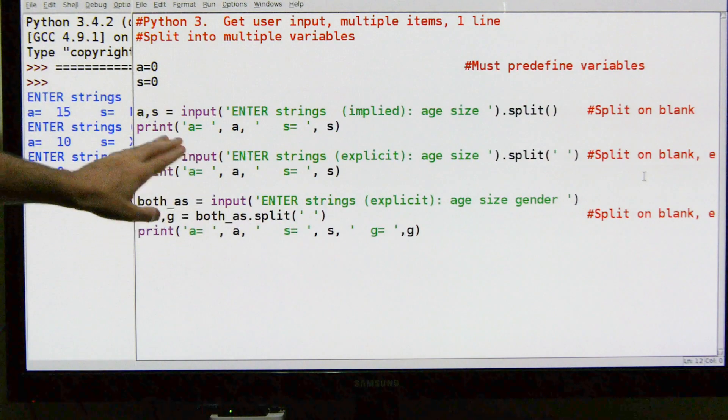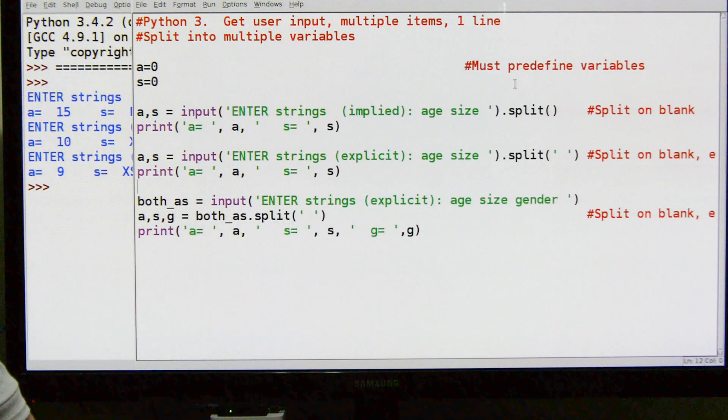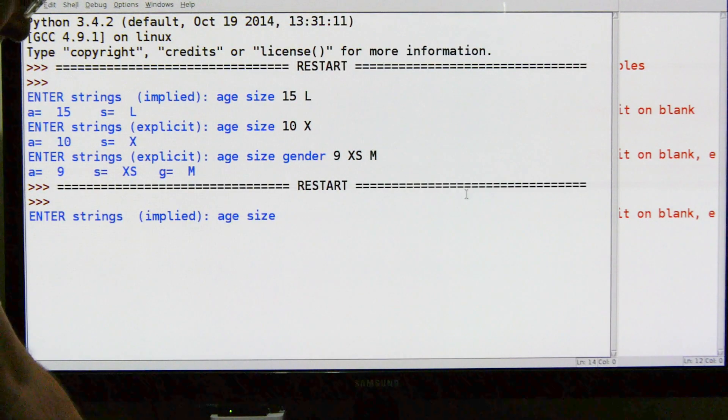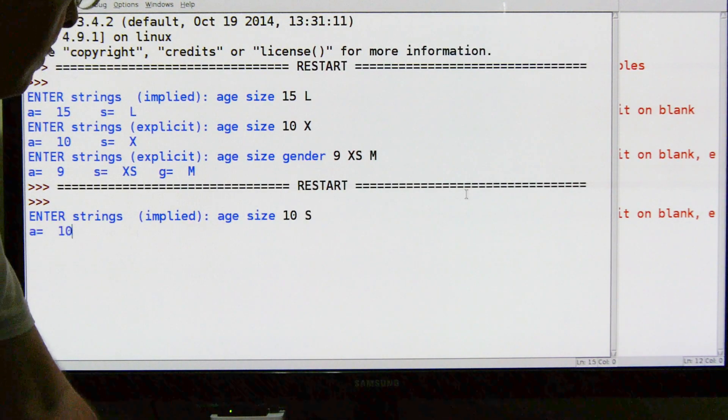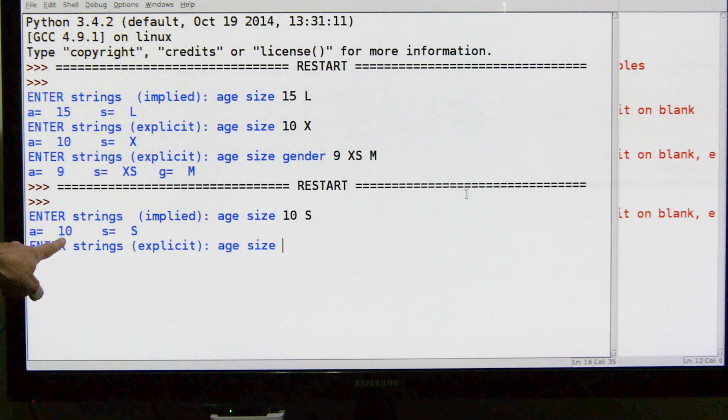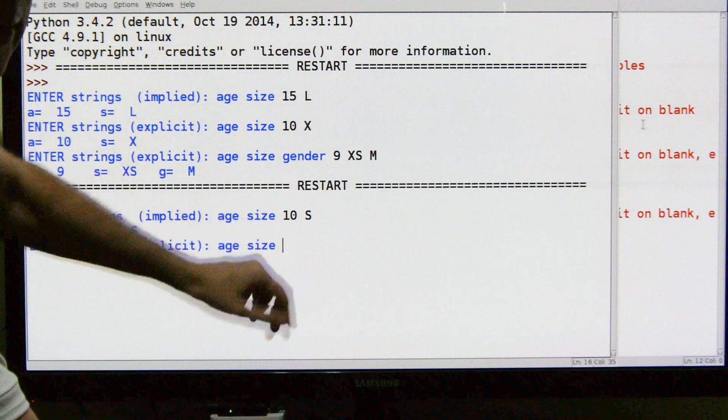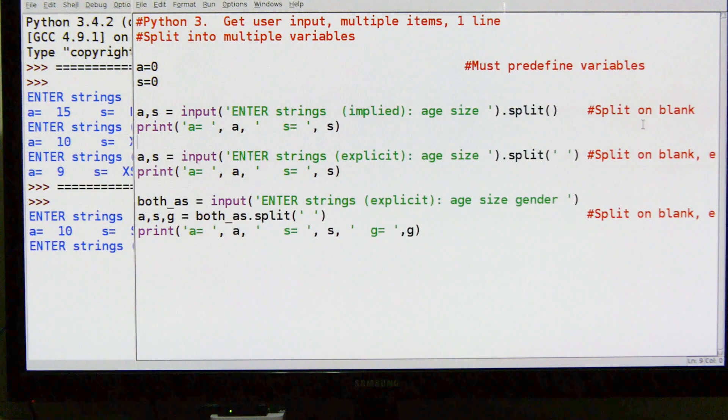It's going to split and then we're going to print out a and s. We'll run it again - let's say 10 and small, and sure enough age 10, size small. So one line of input gives us two different variables, broken out based on the space in between them.